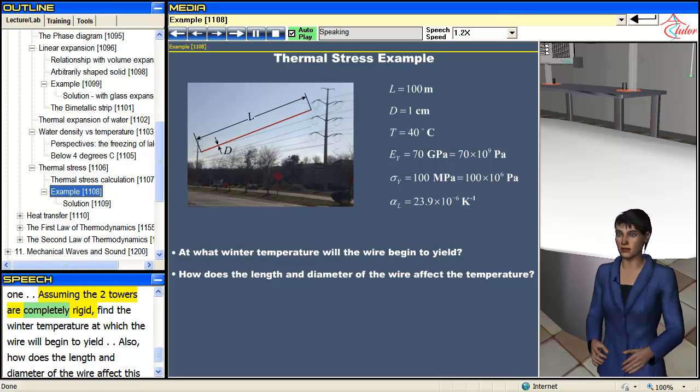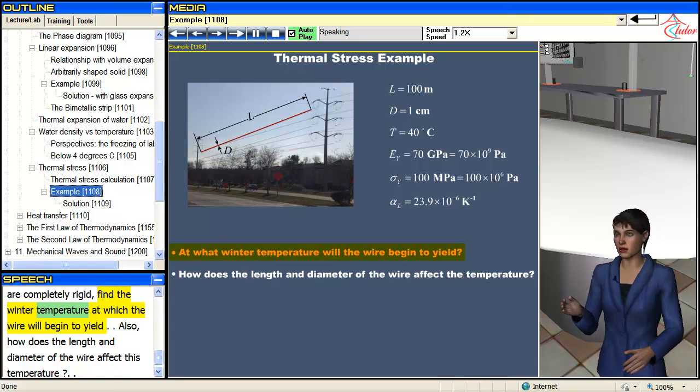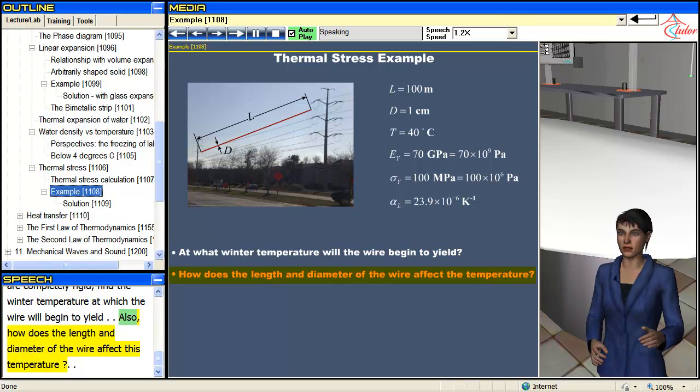Assuming the two towers are completely rigid, find the winter temperature at which the wire will begin to yield. Also, how does the length and diameter of the wire affect this temperature?